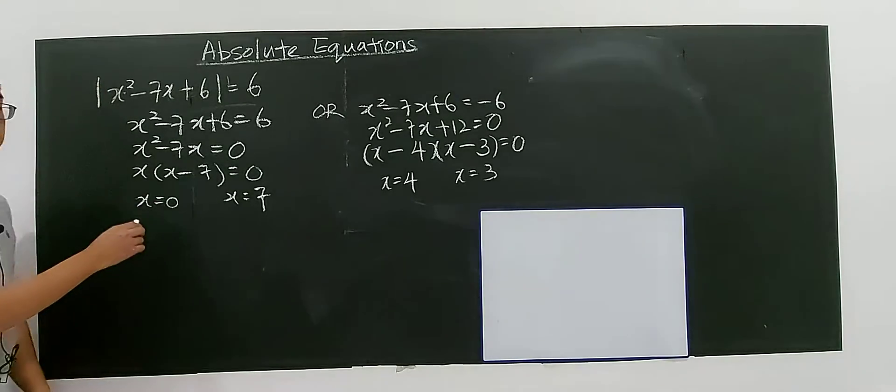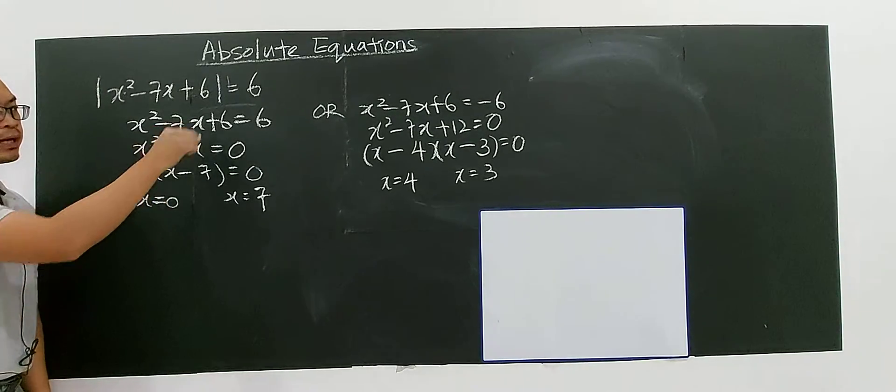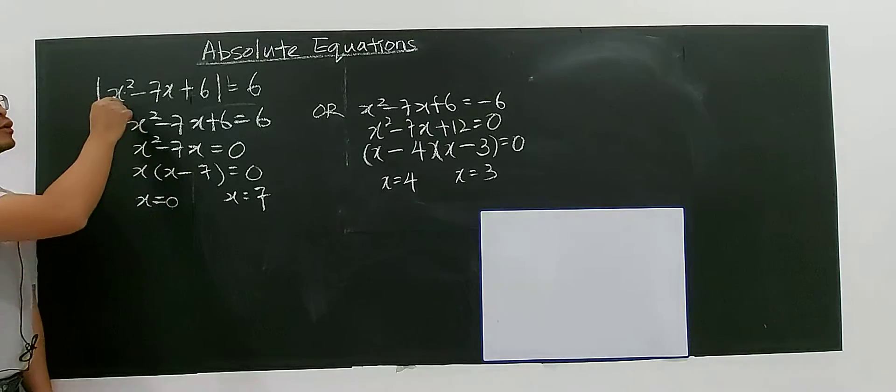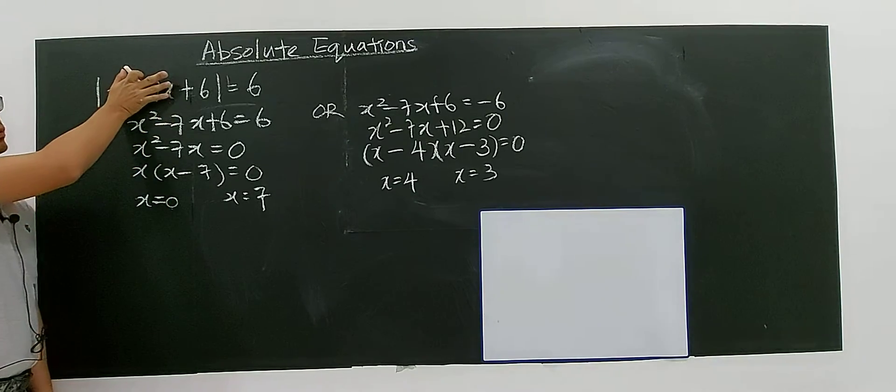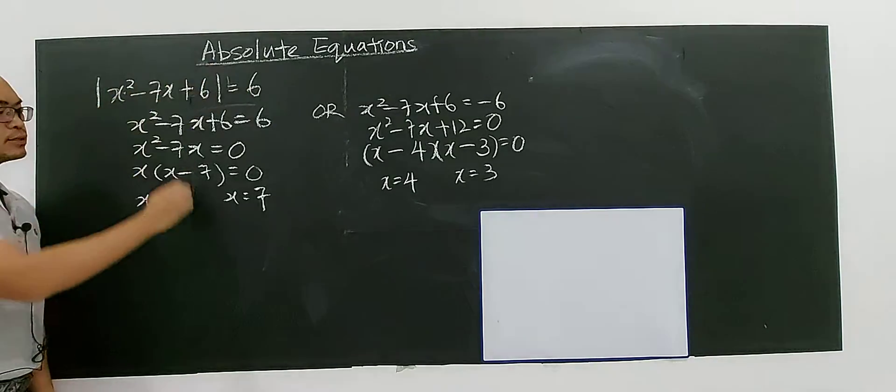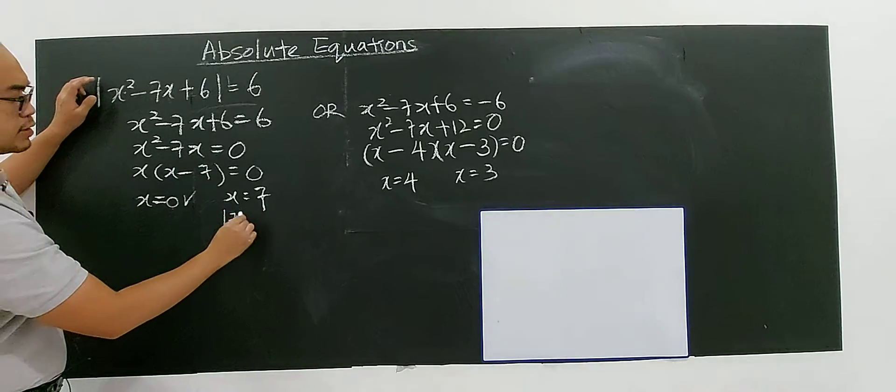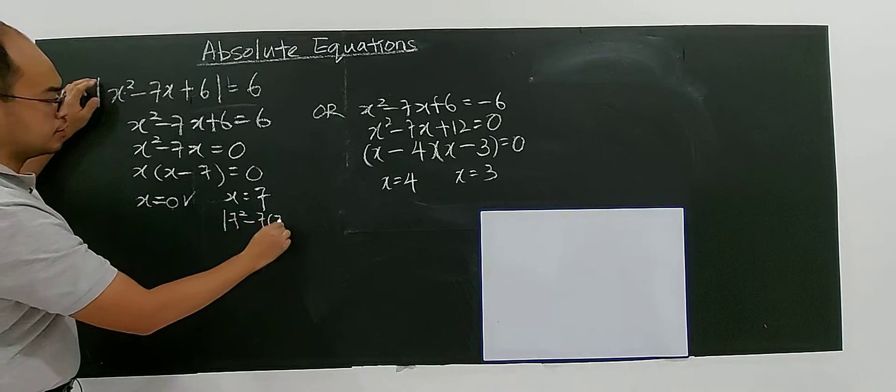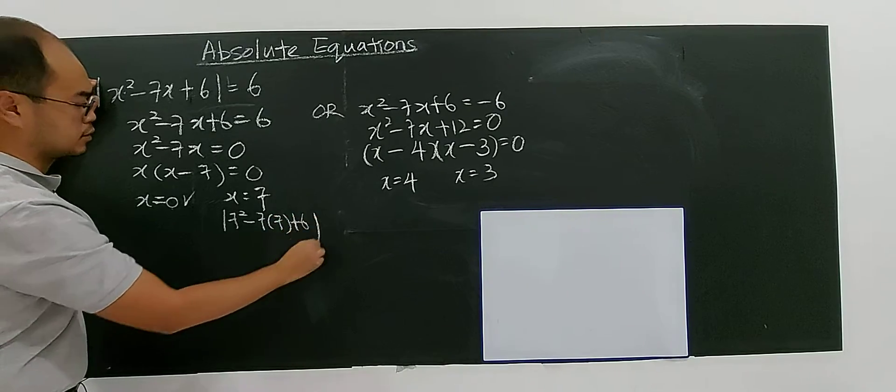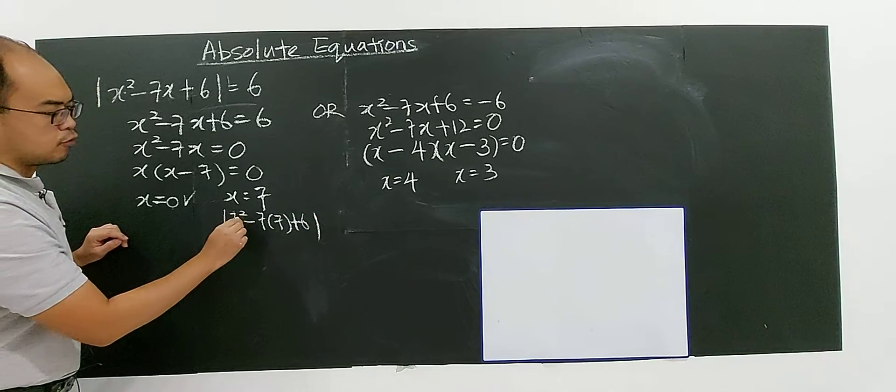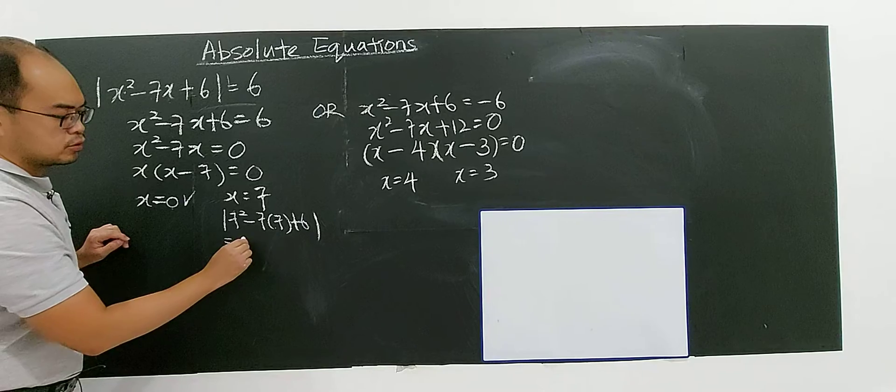Sometimes you may have errors here. Zero: you put zero, you have |6| = 6. Yes, this is your solution. How about 7? Seven squared minus 7 times 7 plus 6. 49 minus 49 is 0, so you're still getting 6. Yes, this is your solution.